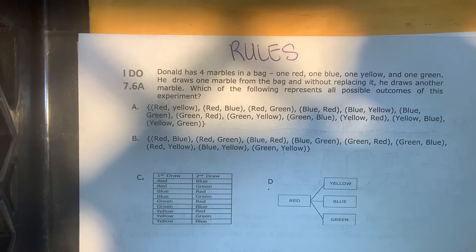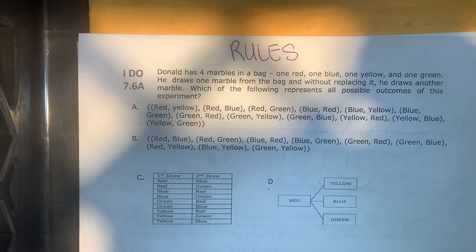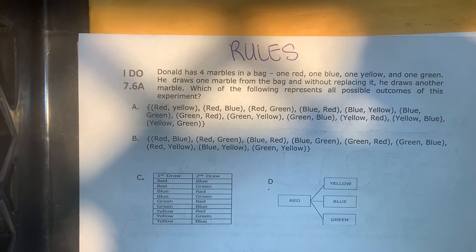Donald has four marbles in a bag: one red, one blue, one yellow, and one green. He draws one marble from the bag, and without replacing it, he draws another marble. Which of the following represents all the possible outcomes of this experiment?